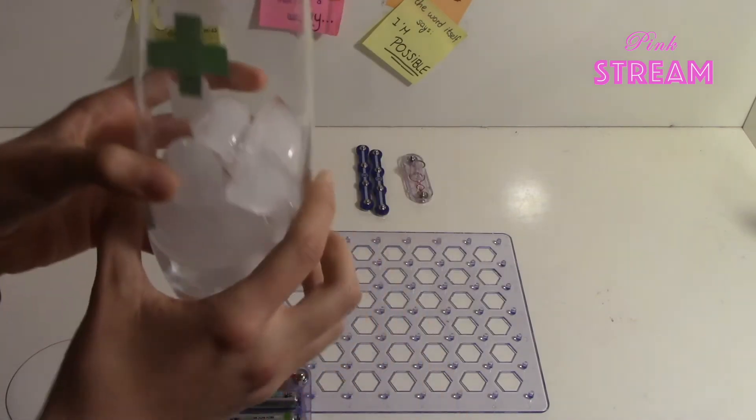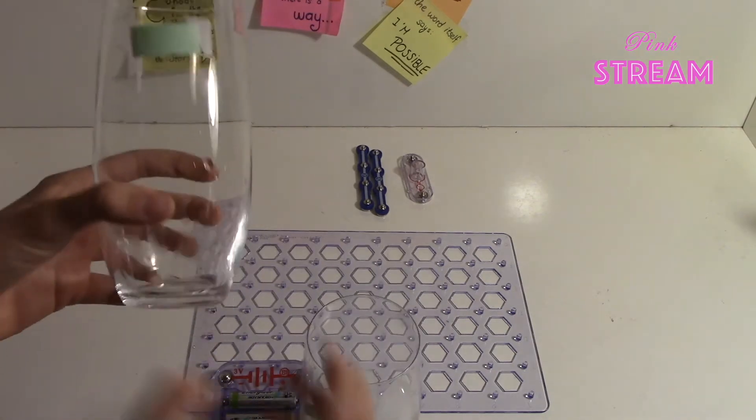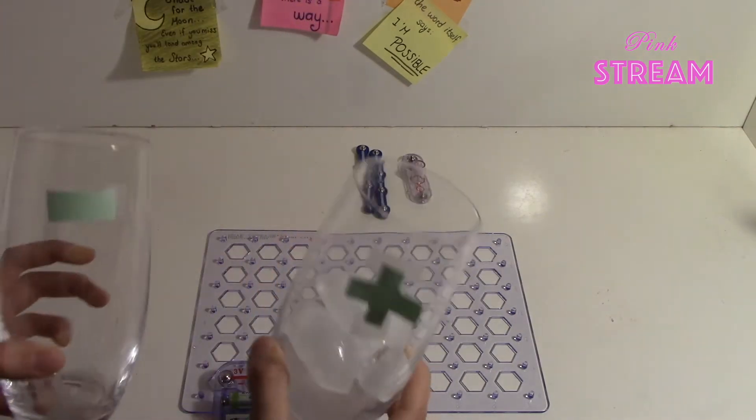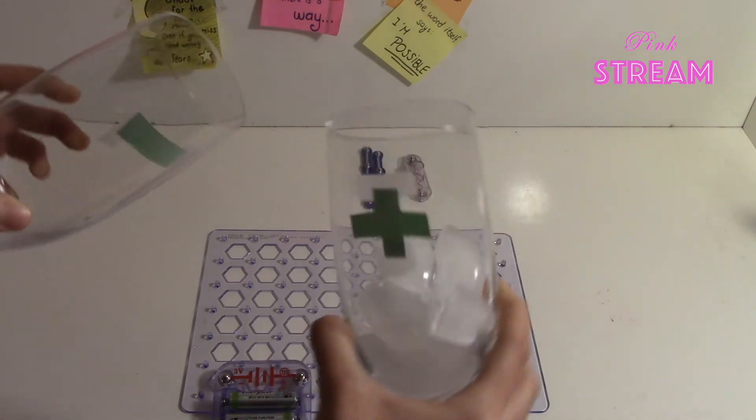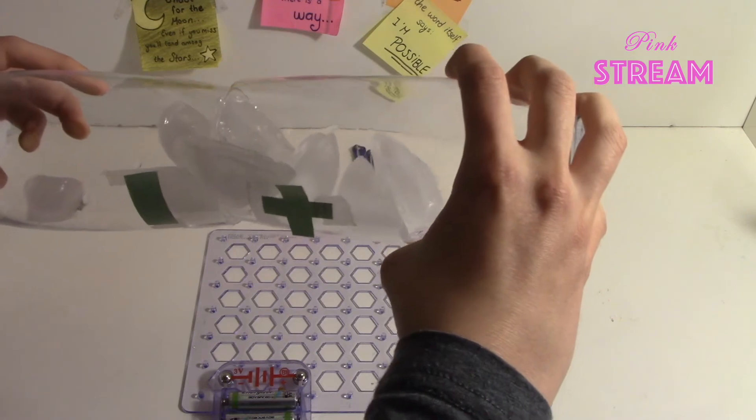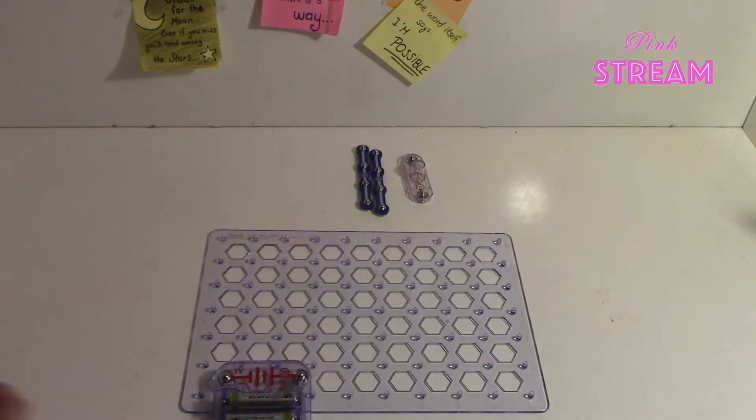Here, as you see, in the plus side we have a lot of electricity, and in the negative one we don't have any. When we bring them together like this, you'll see the cubes move from the plus one to the minus one. That's how electricity actually works too.